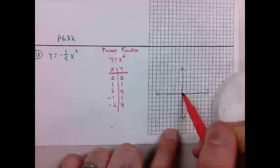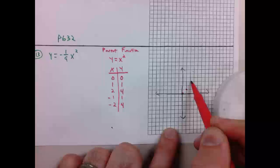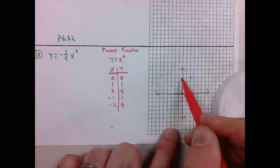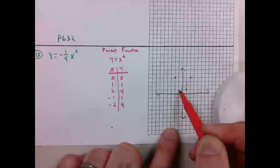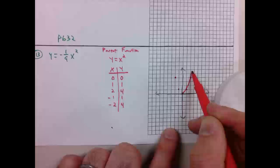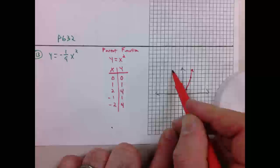It has a vertex at 0, 0. The point 1, 1, and 2, 4. And so is its reflection, negative 2, 4, negative 1, 1. It's a parabola, a u-shaped curve. It's opened up because the value of a is positive. It's an implied 1.